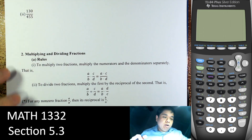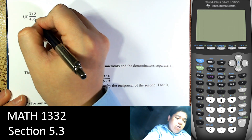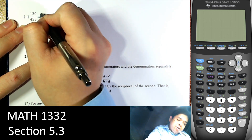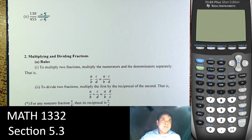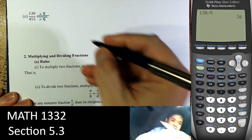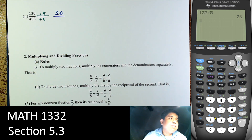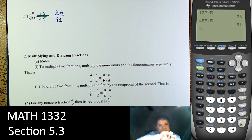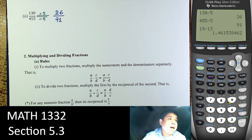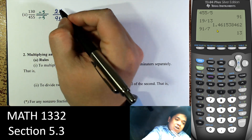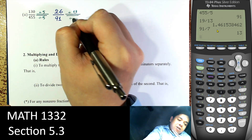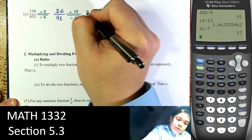For 130 over 455: it ends with 0 and ends with 5, so both are divisible by 5. Dividing top and bottom by 5 gives 26 over 91. Then 91 divided by 7 is 13, so we can divide top and bottom by 13. That gives us 2 over 7.